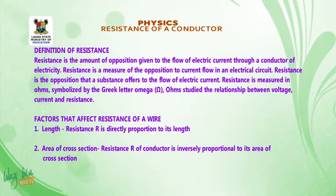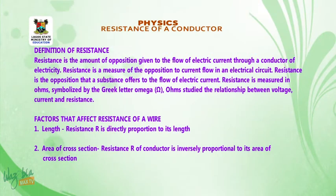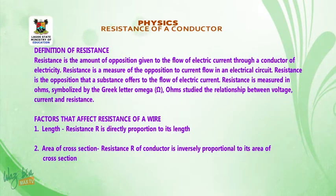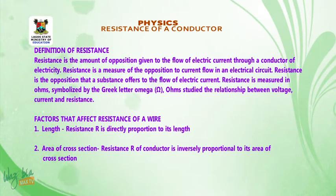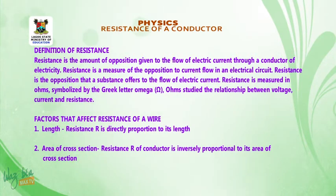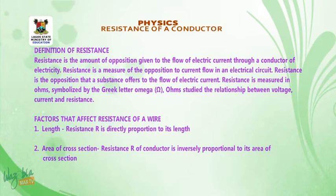Area of cross-section. The resistance of the conductor is inversely proportional to its area of cross-section. There is no way we talk about the area of the wire without talking about the radius or the diameter of the wire. So the area in terms of the thickness — the diameter of the wire — also matters when talking about cross-sectional area.